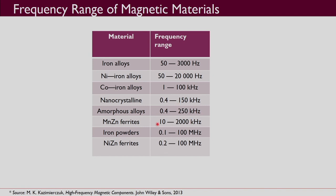Then come ferrites. Manganese-zinc ferrites have a good frequency range — up to about 2 MHz they can be used. Iron powders and nickel-zinc based ferrites have an even higher frequency range — up to about 100 MHz.